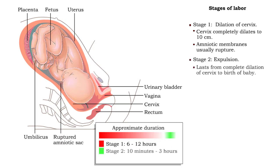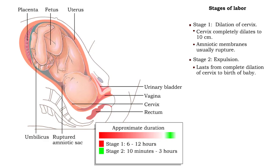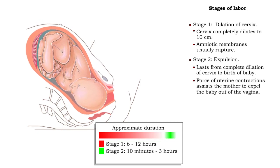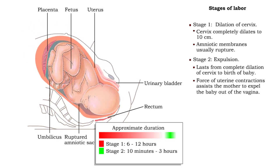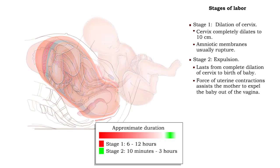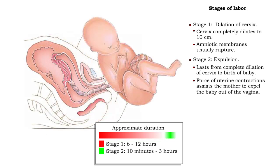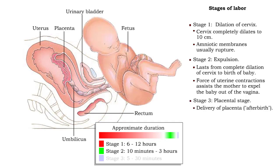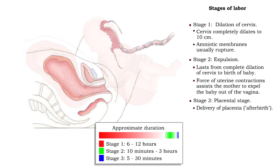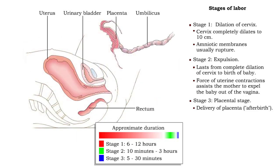In the second stage of labor, the fetus descends through the open cervix into the vagina and under the symphysis pubis. The force of the contracting uterine muscles combines with the mother's voluntary pushing efforts to deliver the fetus from the vagina. In the third stage, the placenta is expelled and the uterus contracts upon itself, thereby preventing the mother from hemorrhaging.